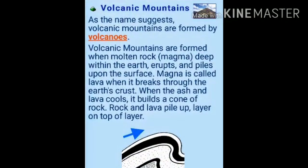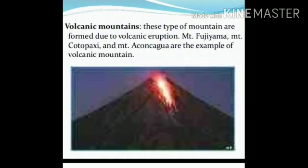Volcanic mountains are formed by magma rising up from the mantle to the crust of the earth. When this magma reaches the surface, it cools and hardens and piles up around the opening, gradually forming a mountain. Examples of volcanic mountains include Mount Kilimanjaro in Tanzania, Mount Etna in Sicily, and Mount Fujiyama in Japan.